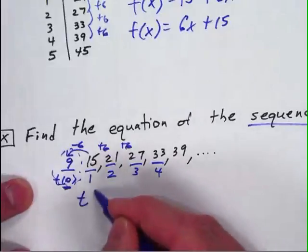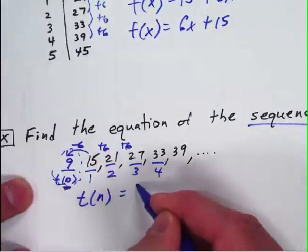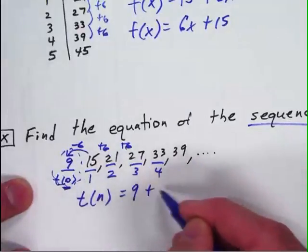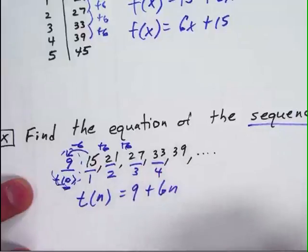Therefore my equation would be a sequence, t of n equals, it starts at 9, and then it adds 6 each time, or plus 6n.